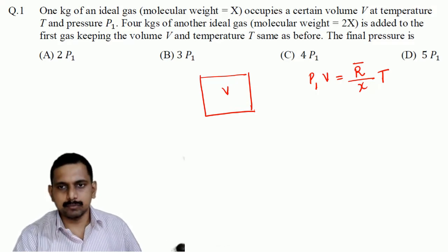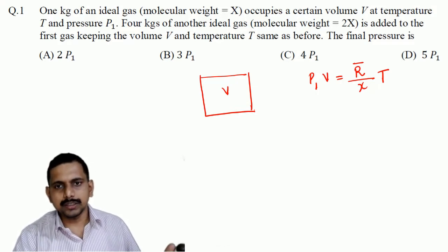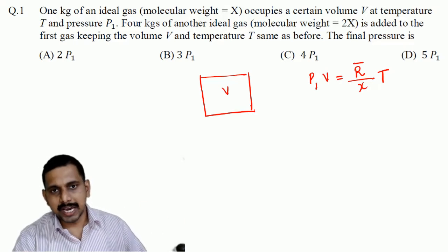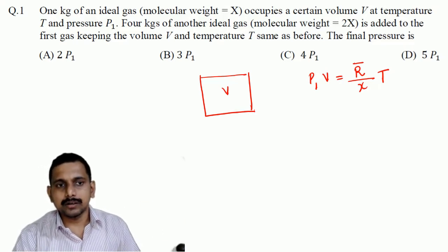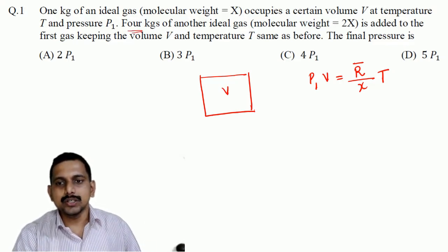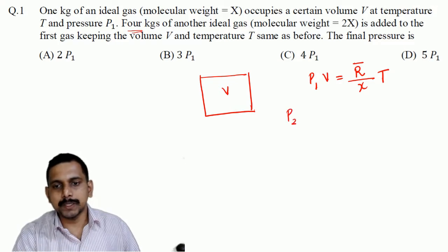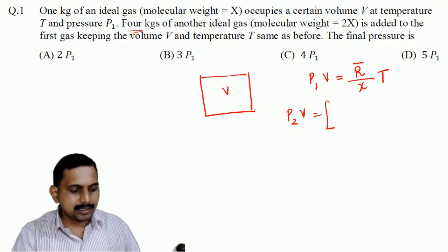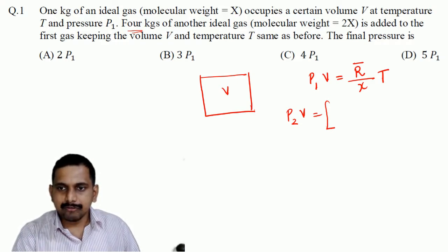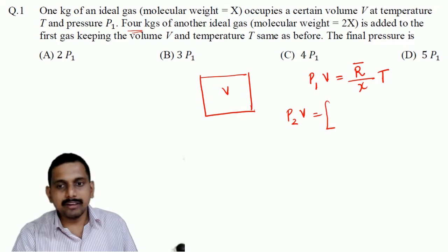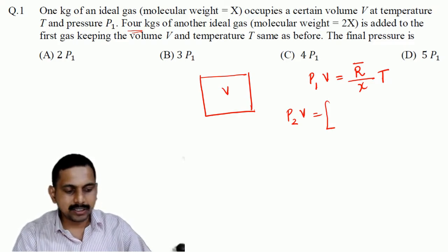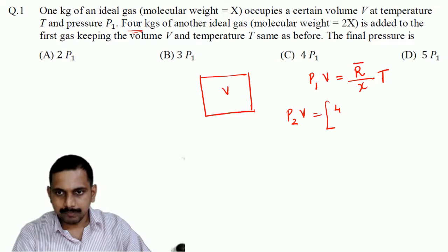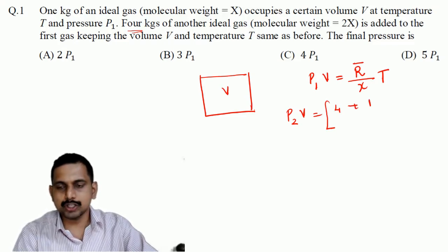We are adding more of the other gas which has a molecular weight two times the first, and we are adding 4 kg of that mass. The new P2 times volume — volume remaining the same — we are adding 4 times the mass. So we write 4 times mass, plus the 1 kg of the original gas that is always there.